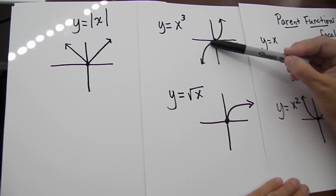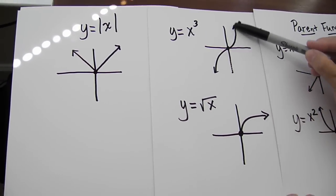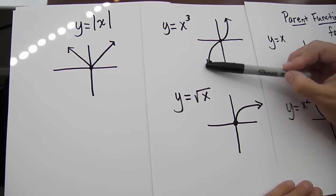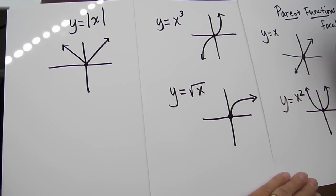Here, if you notice, our curve goes to negative infinity and positive infinity with no restriction, so our range here is also all real numbers.